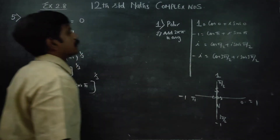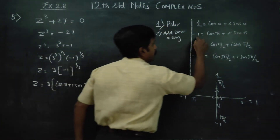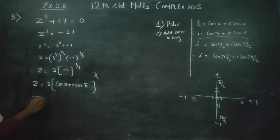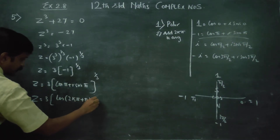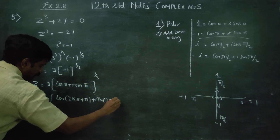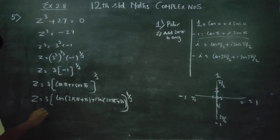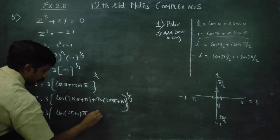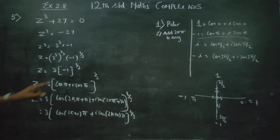After changing into polar form, write the ready-made answer as cosπ plus i sinπ, then add 2kπ to the argument. The nth root becomes z equals 3 into (cos(2kπ plus π) plus i sin(2kπ plus π)) to the power 1/3. Taking 2kπ common, the expression is z equals 3 into (cos(2kπ plus π) plus i sin(2kπ plus π)) whole power 1/3.